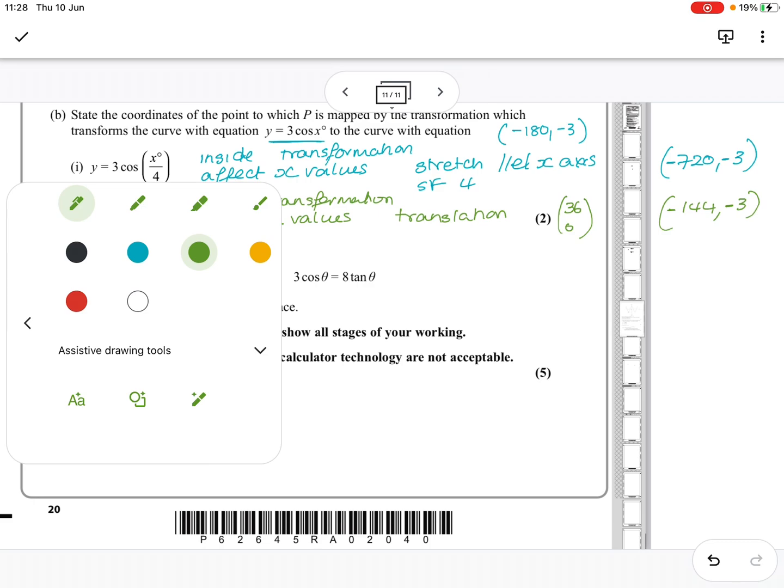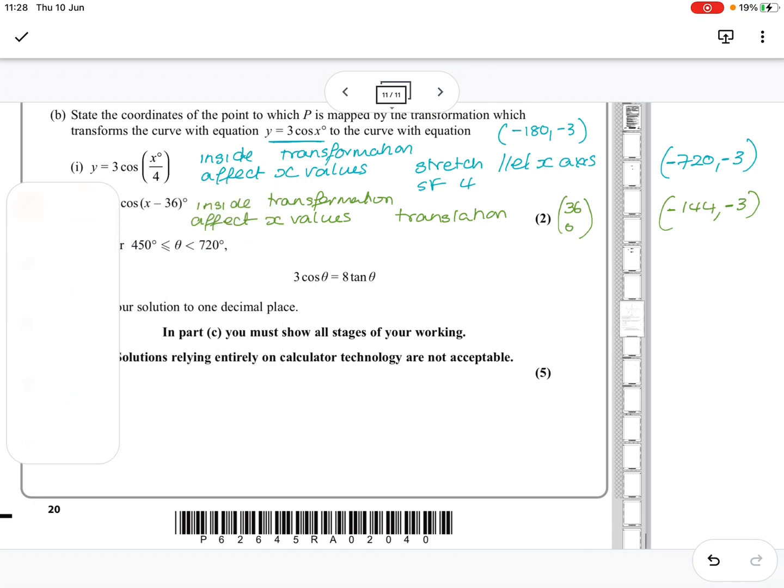Final part. We have got 3 cos theta equals 8 tan theta. Tan is sin theta over cos theta. Times both sides by cos theta. You end up with 3 cos squared theta equals sin theta.